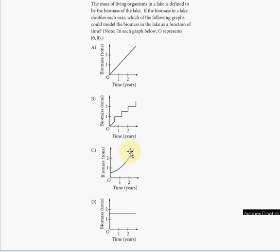An exponential function looks something like this, and it matches exactly what we need to do here. The biomass increases by a factor of two each year. So answer choice C.